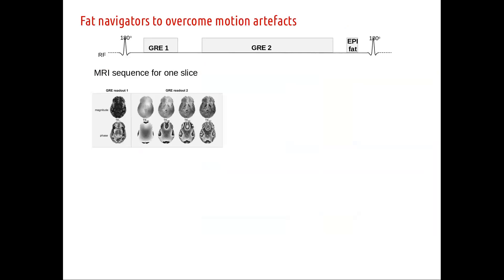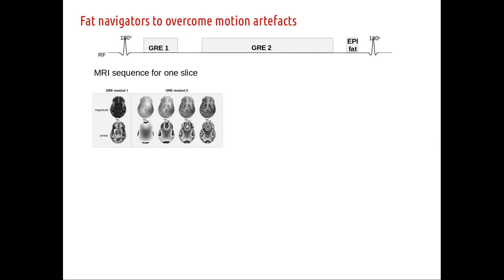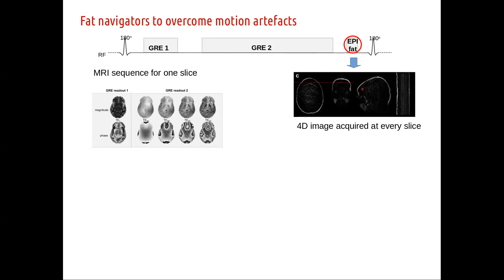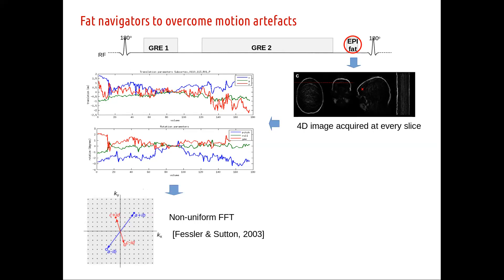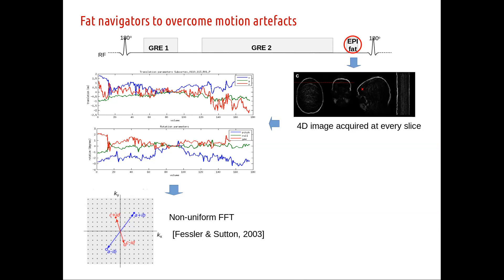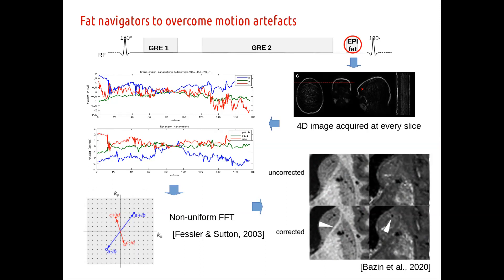One thing that is always a problem even with shortened sequences is motion. We managed to squeeze in a tiny fat navigator sequence at every slice — every time you take a slice of MRI, you also take a 3D navigator showing you the fat content of the head, from which you can define motion parameters: translation and rotation. You can then adjust the imaging grid using a non-uniform Fourier transform and do a corrected reconstruction. Because it's retrospective, you have both the uncorrected and corrected results to compare.